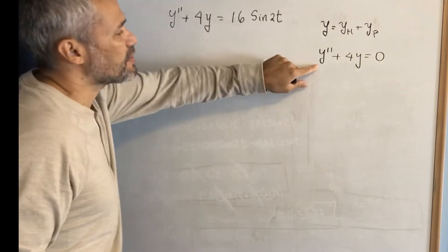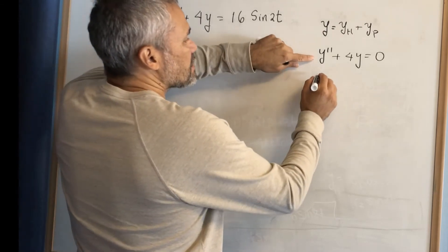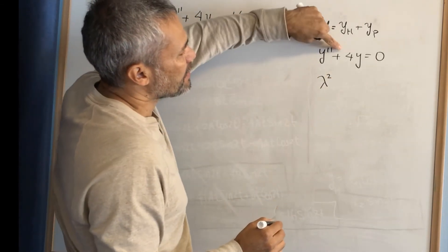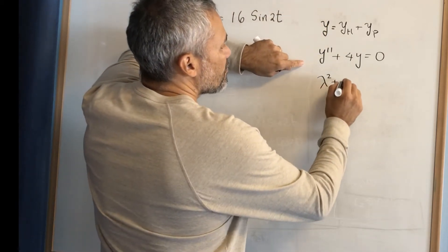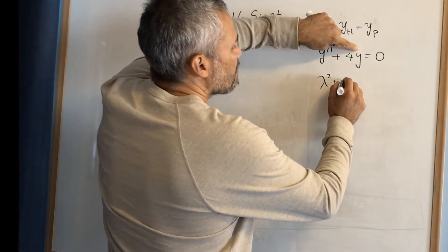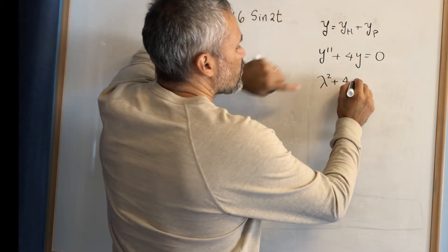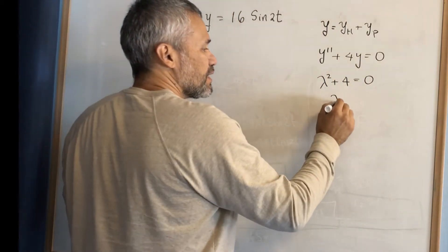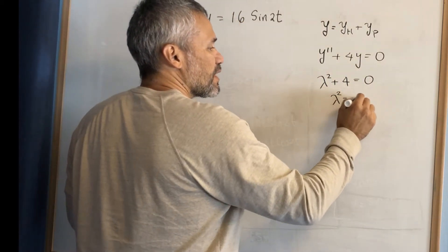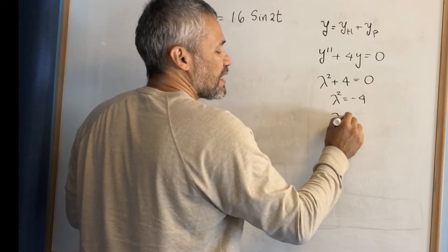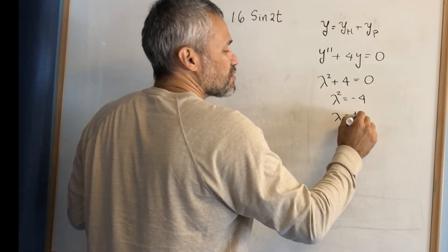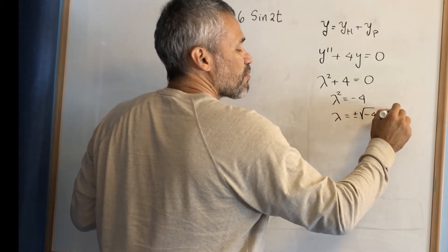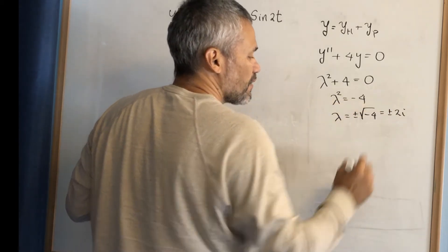To solve this differential equation, we change the second derivative by lambda squared, the first derivative by lambda — but there is no first derivative — and the function y by 1, giving 4 times 1, and we make it equal to 0. We solve this quadratic: lambda squared equals negative 4, and that means lambda is equal to plus or minus the square root of negative 4, which is plus or minus 2i.